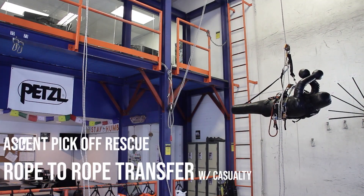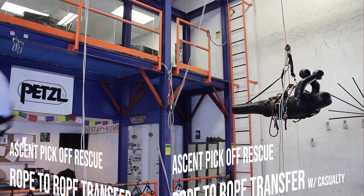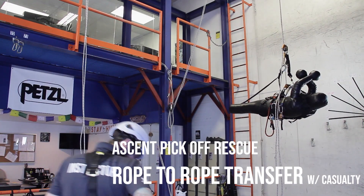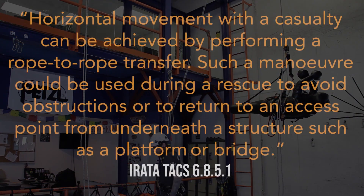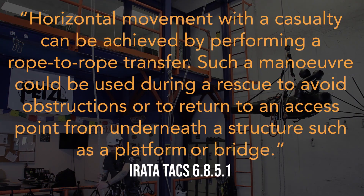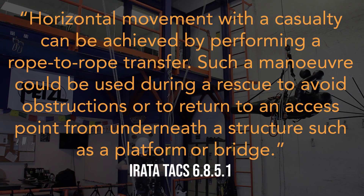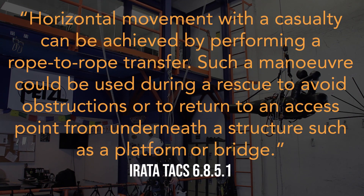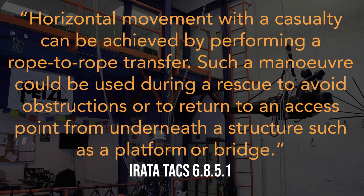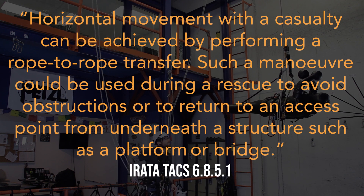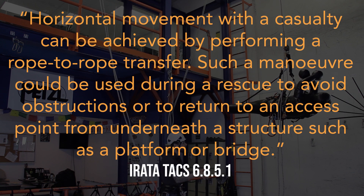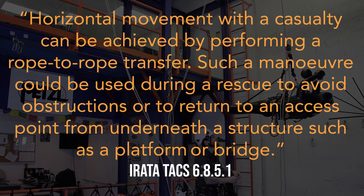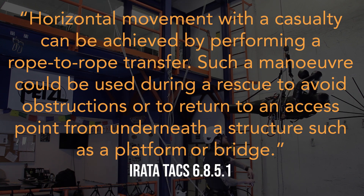Hey everyone, let's take a look at the rope-to-rope transfer with a casualty. The goal here is simply to move the casualty from their original set of lines that they became incapacitated on to another set of lines. It could be to avoid an obstacle or get out from underneath the platform, something like that.